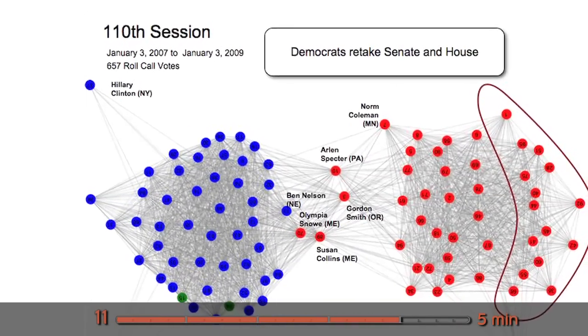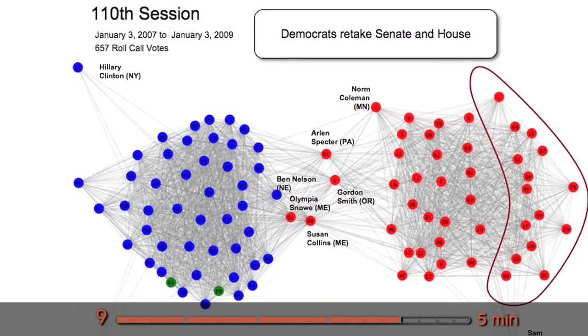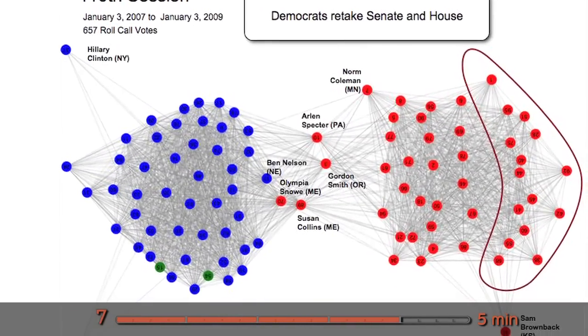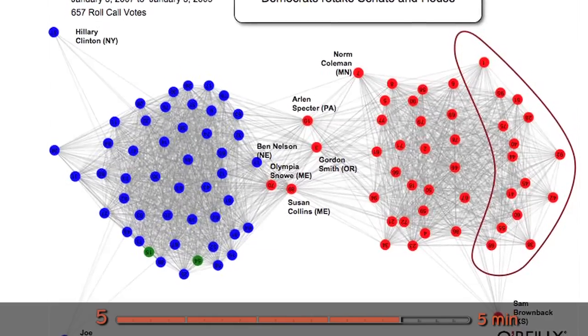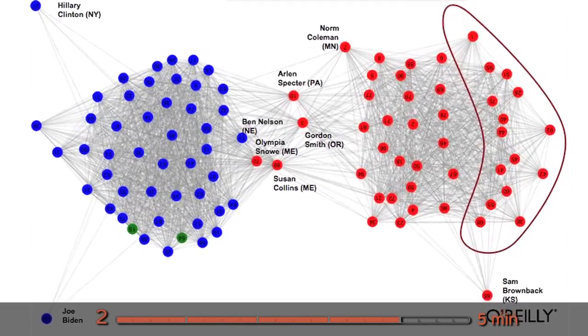This is the next session in which the Democrats took control back of the House of Representatives and the Senate. So you can see here again a little bit of lack of structure on the Republican side, but very structured on the Democratic side.